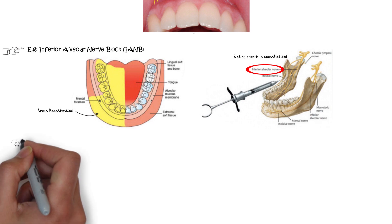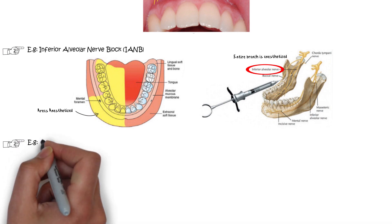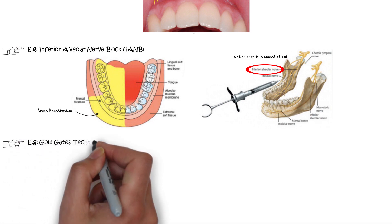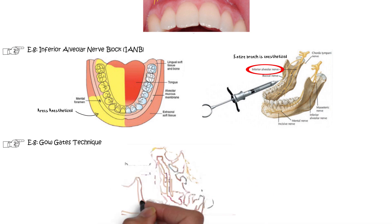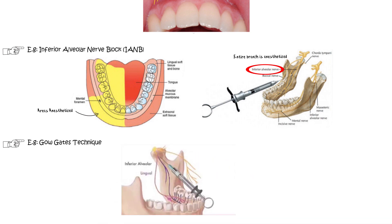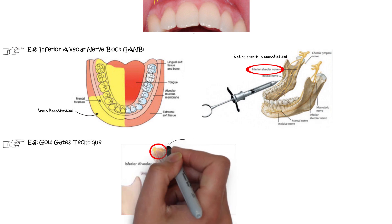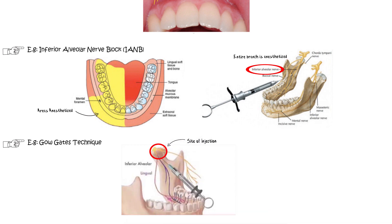Another example of the nerve block technique is the Gaugets technique, also known as the true mandibular nerve block. In this block, the entire division of the mandibular nerve is blocked with a single injection, with the site of injection around the condylar head of the mandible, while the area of intervention is the mandibular posteriors. Just as with the IANB, the site of anesthetic deposition is farther away from the area of intervention.